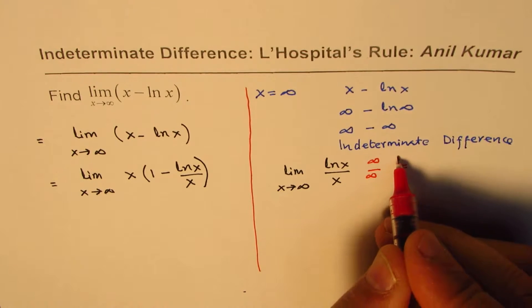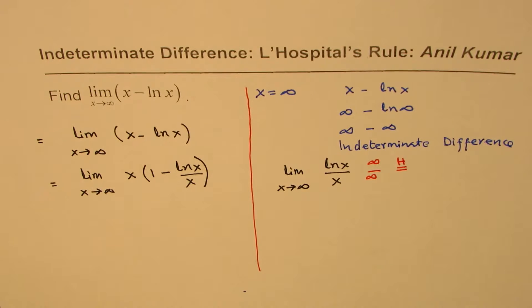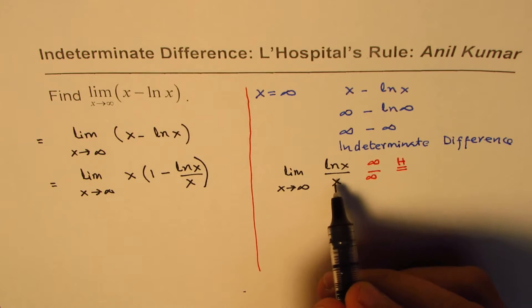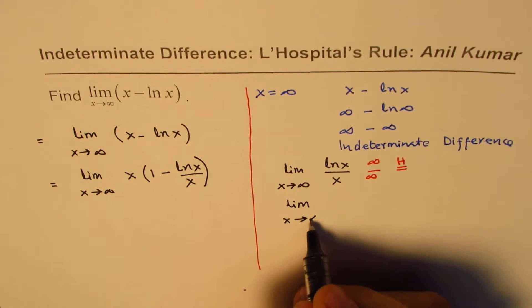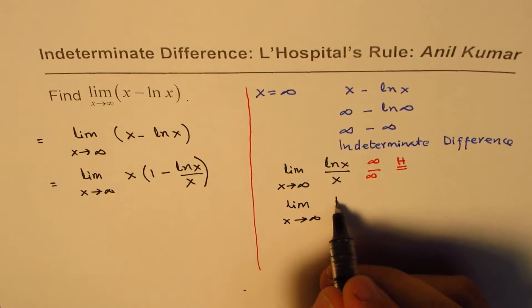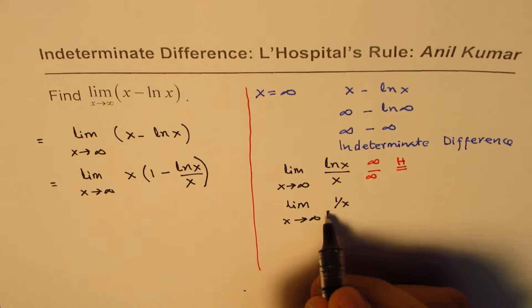The derivative quotient of derivatives has the same limit. We can write this as limit x approaches infinity, derivative of ln x is 1 over x, and the derivative of x is 1.